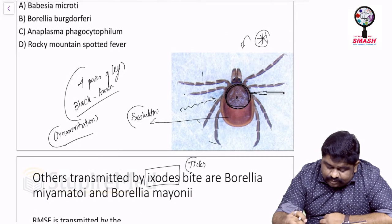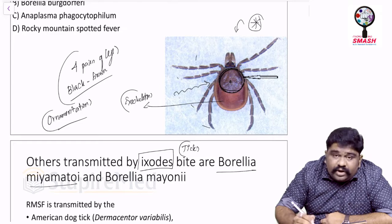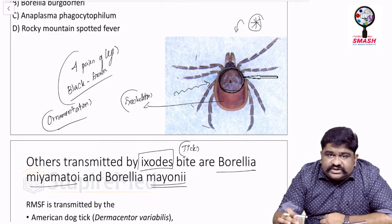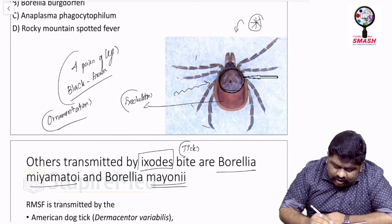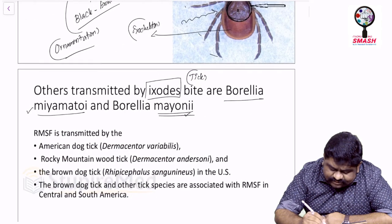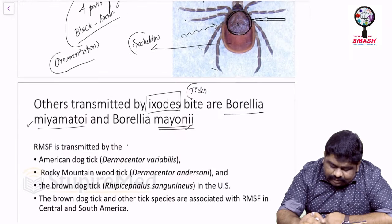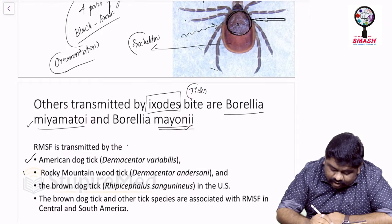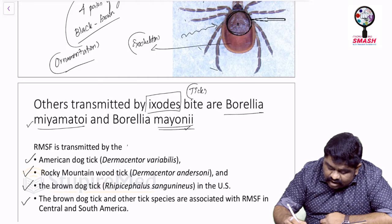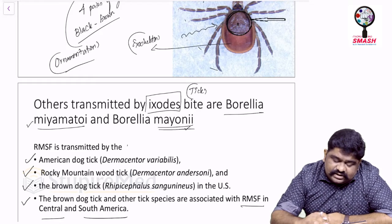Other things transmitted by the Ixodes bite include Borrelia miyamotoi and Borrelia mayonii. Rocky Mountain spotted fever is transmitted by the American dog tick, Rocky Mountain wood tick, the brown dog tick, and other tick species related to RMSF in central and south America.